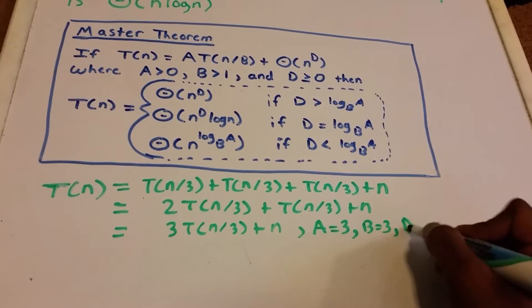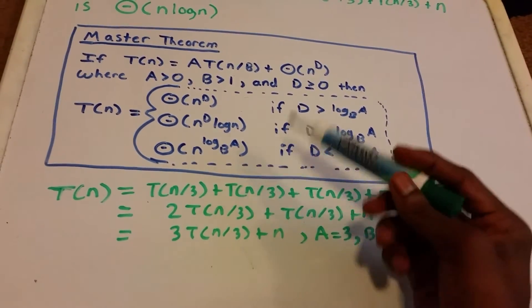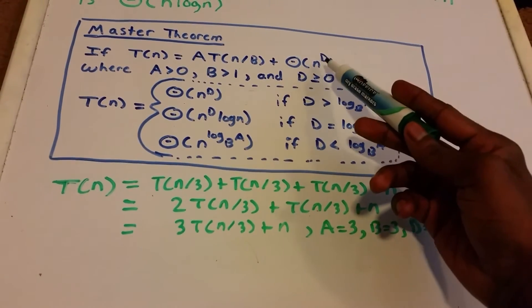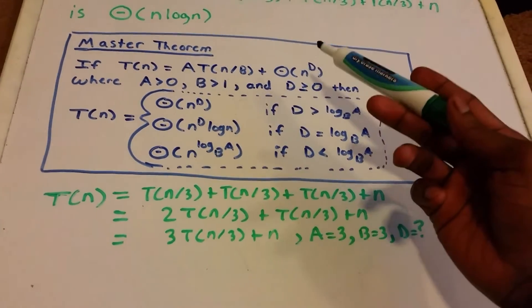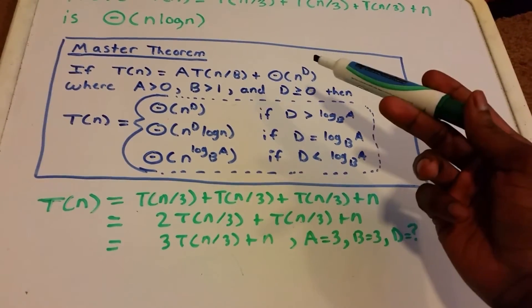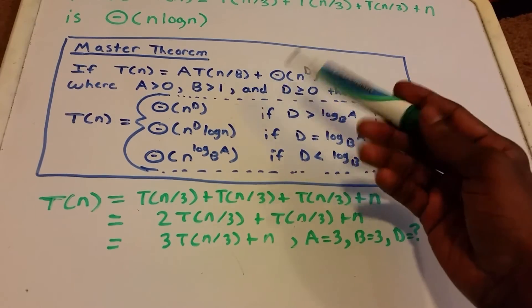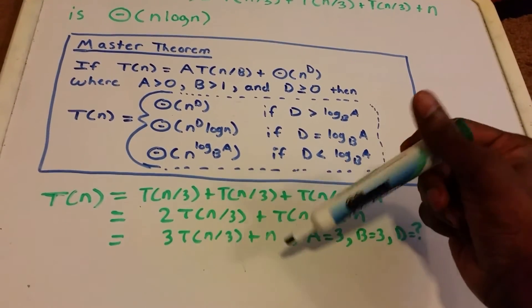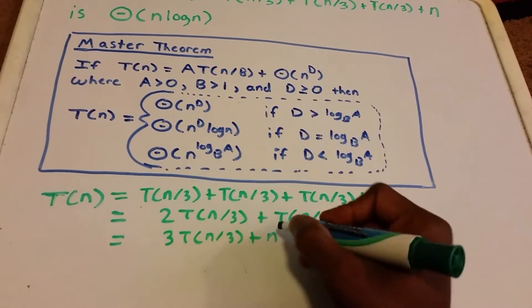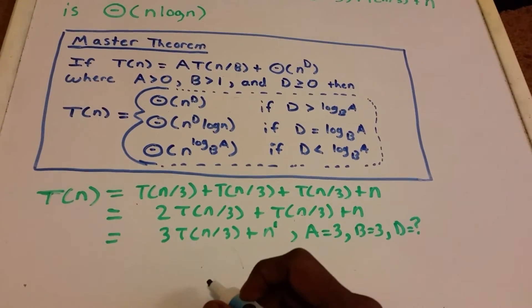And what is d? We have Θ(n^d) in our theorem. Our n here belongs to Θ(n), so d = 1.